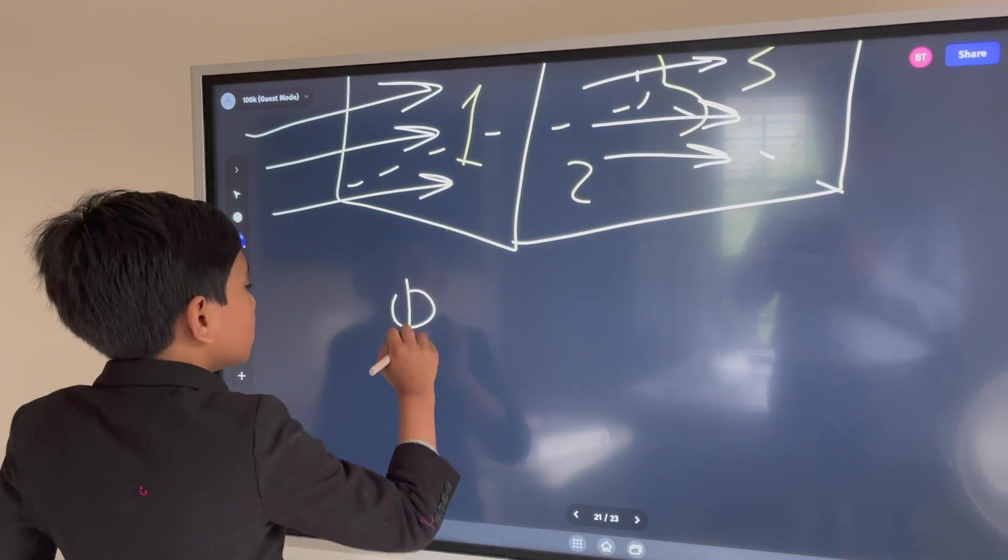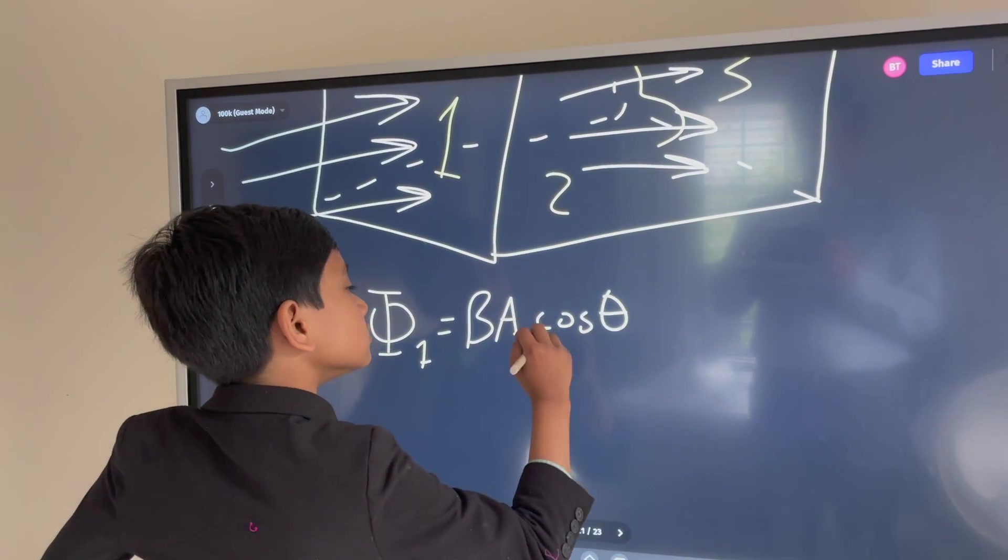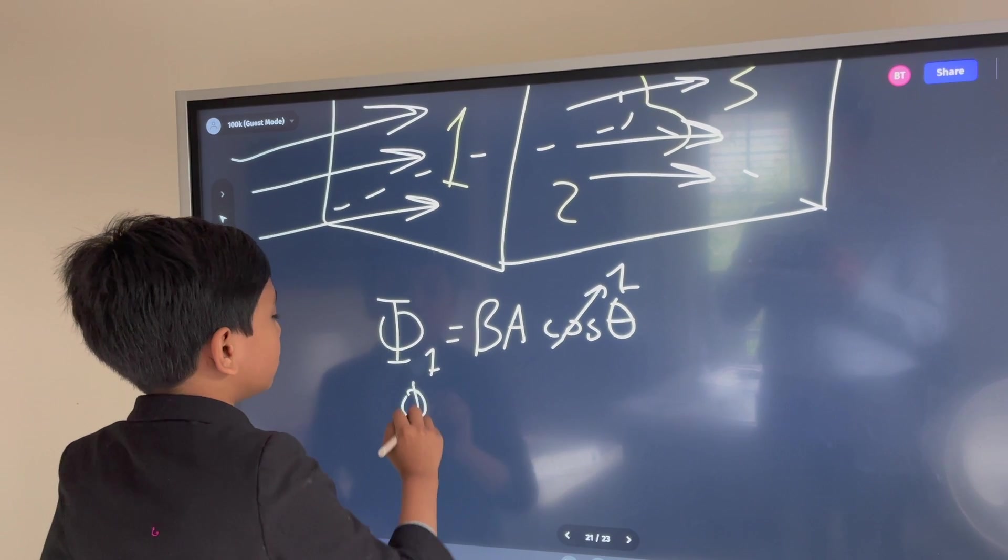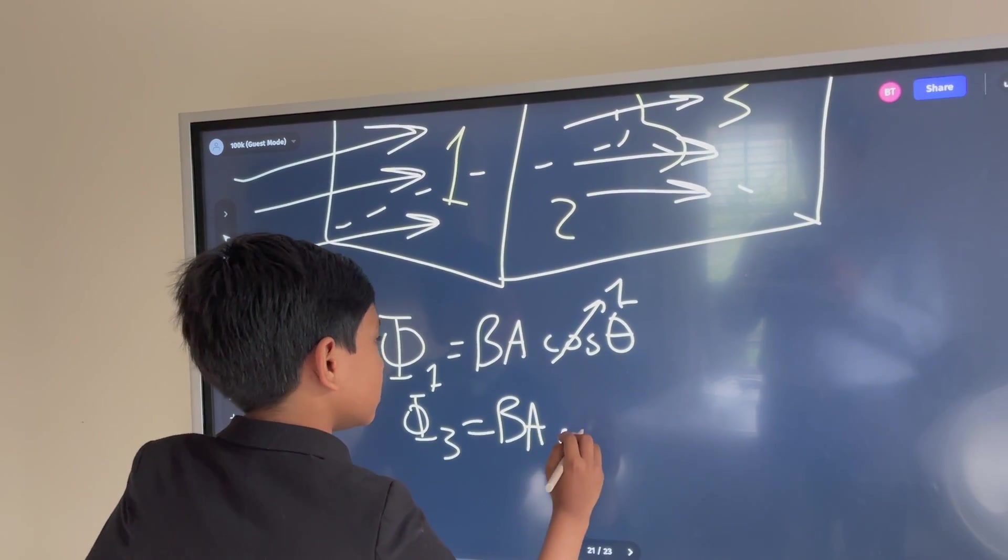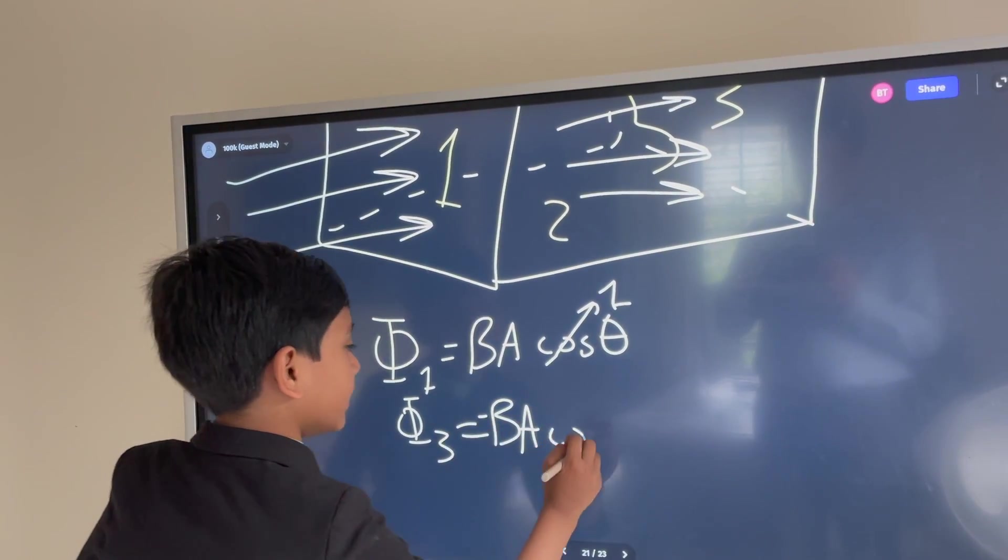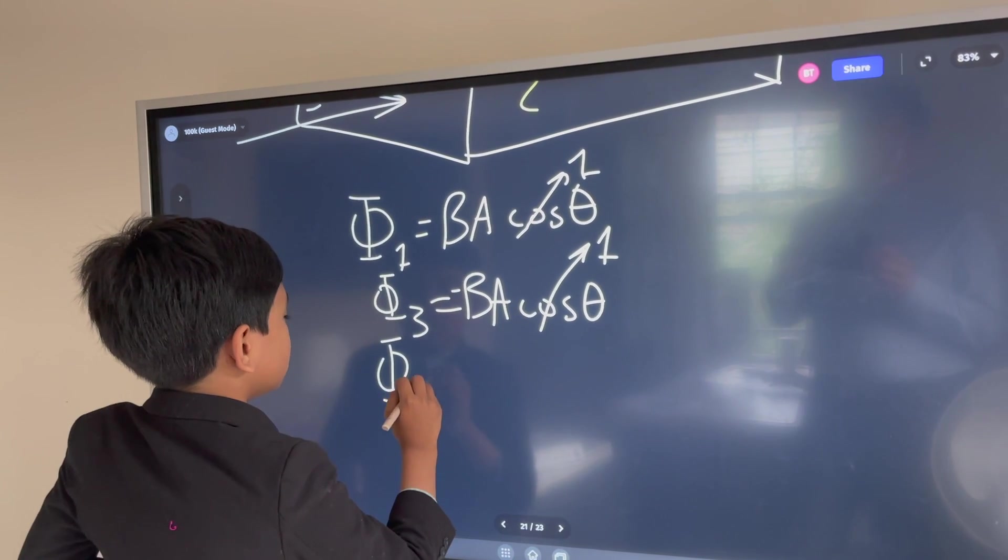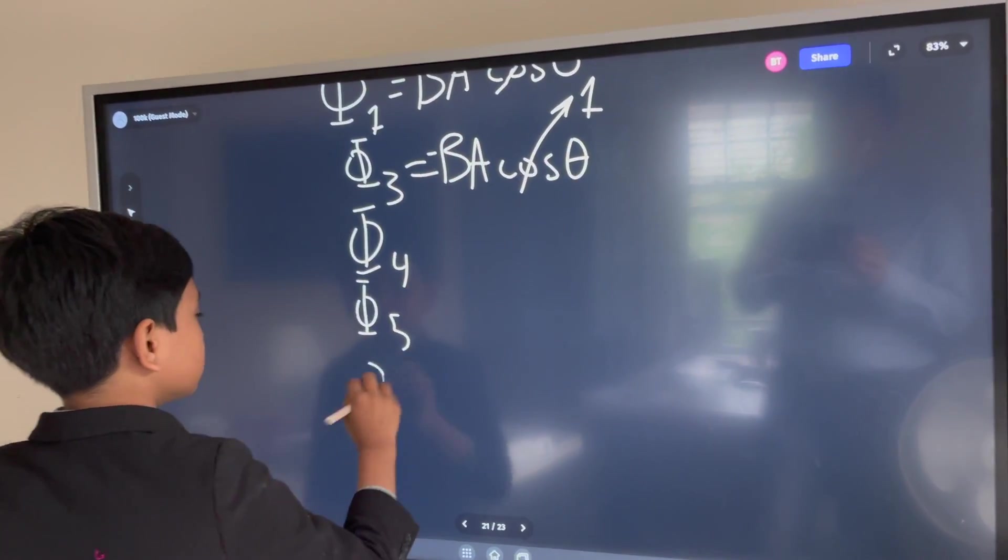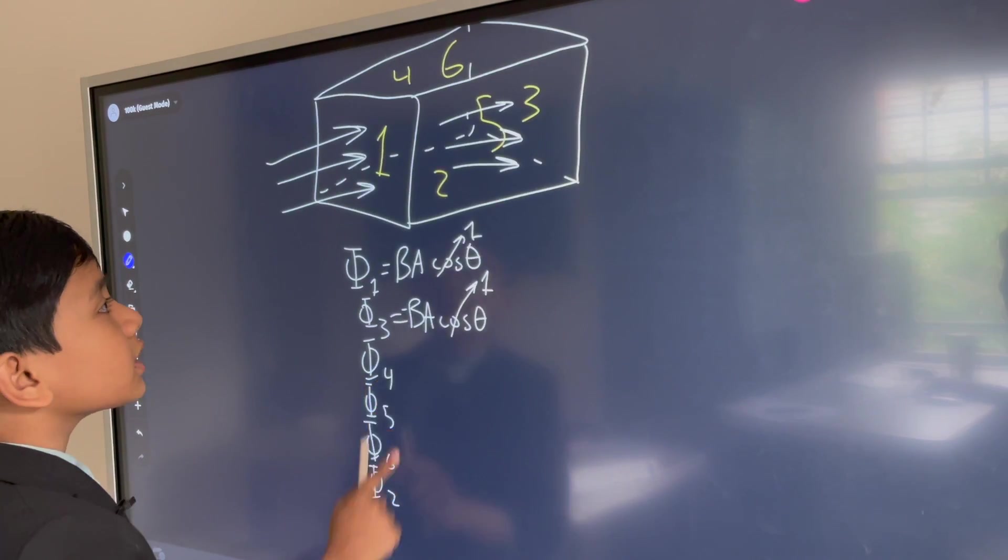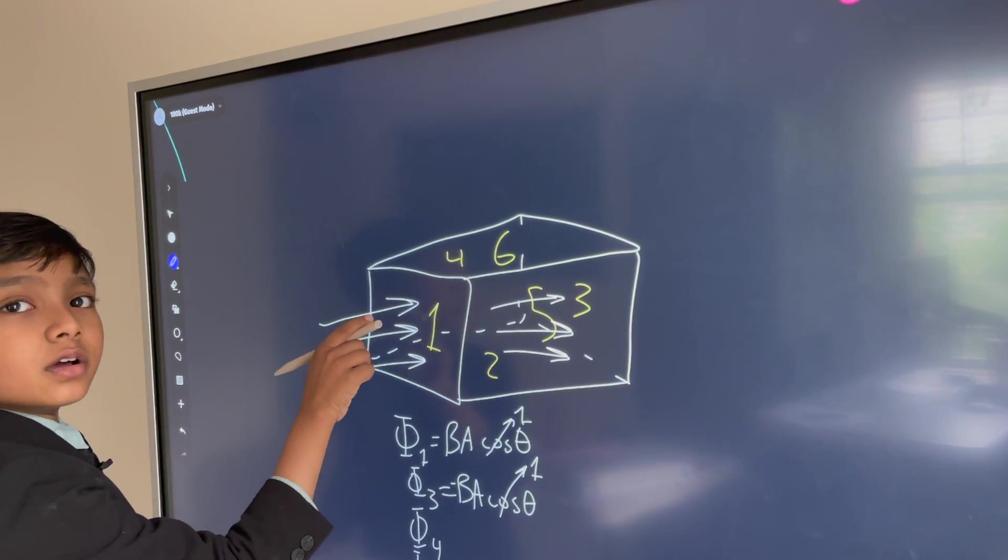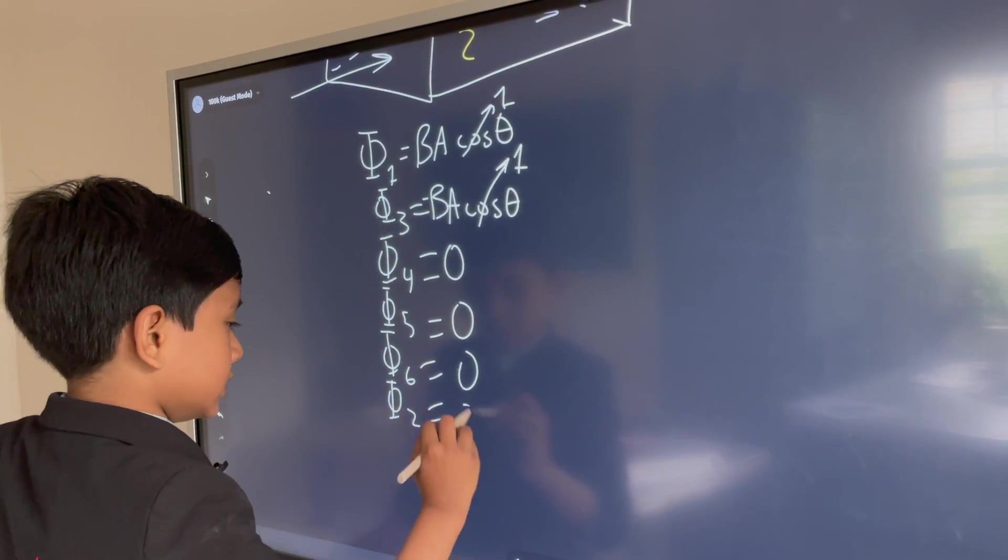And so you can see that it enters through number one and leaves through number three. Meaning number one has a positive flux. And B3 meanwhile has a negative flux. Well, it's actually minus BA, because what comes in must go out. So all the rest are zero. So we don't really care about them. Now the thing is, one is zero degree. Meanwhile, three is the other one. Oh yeah, zero, zero, zero.